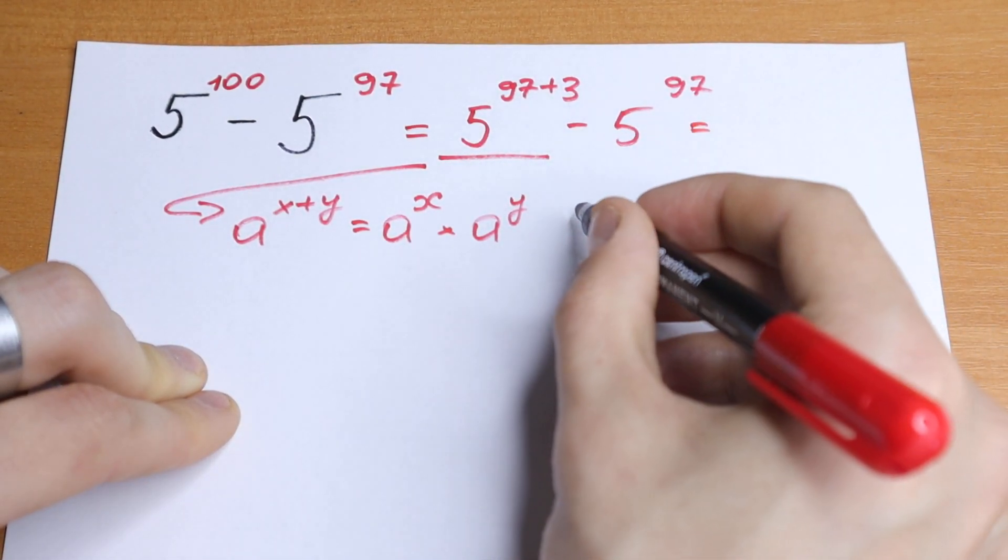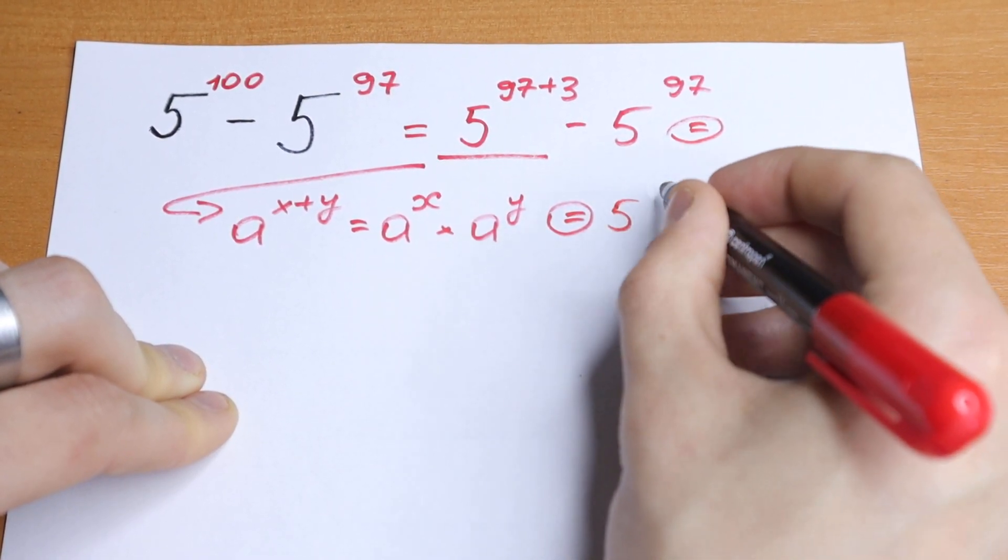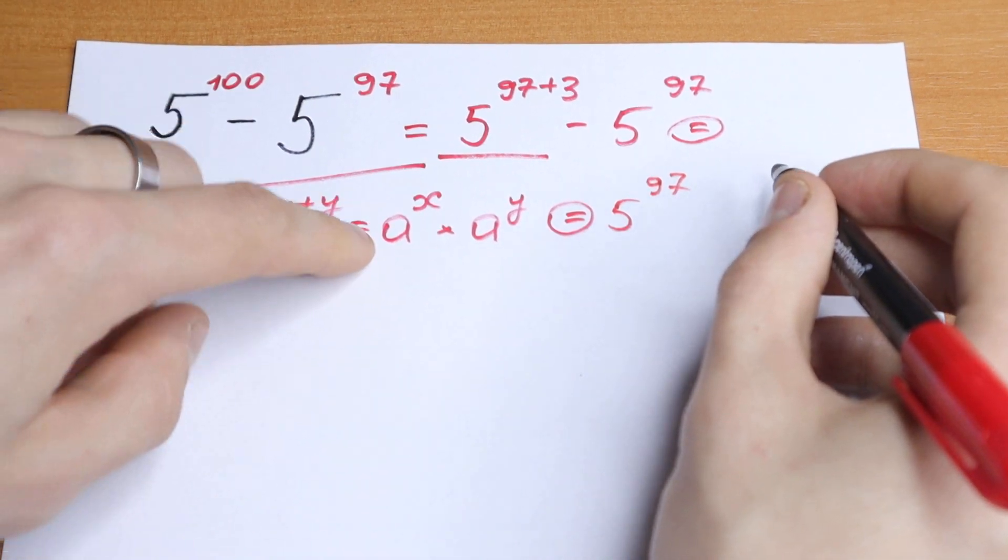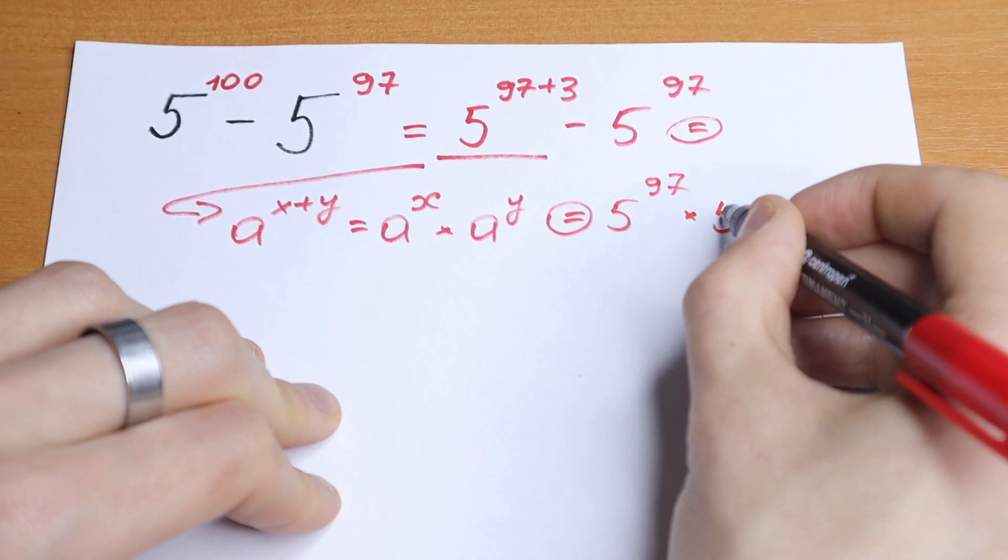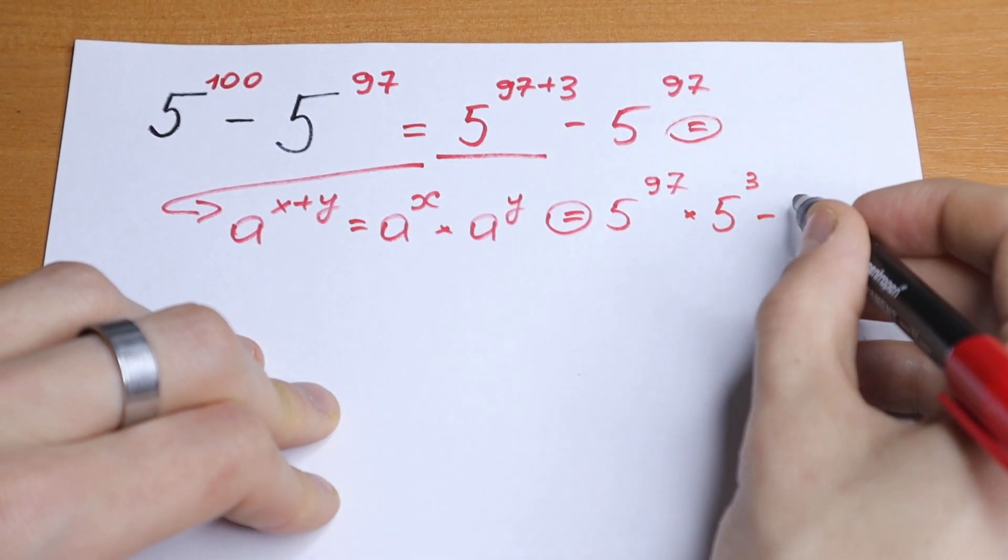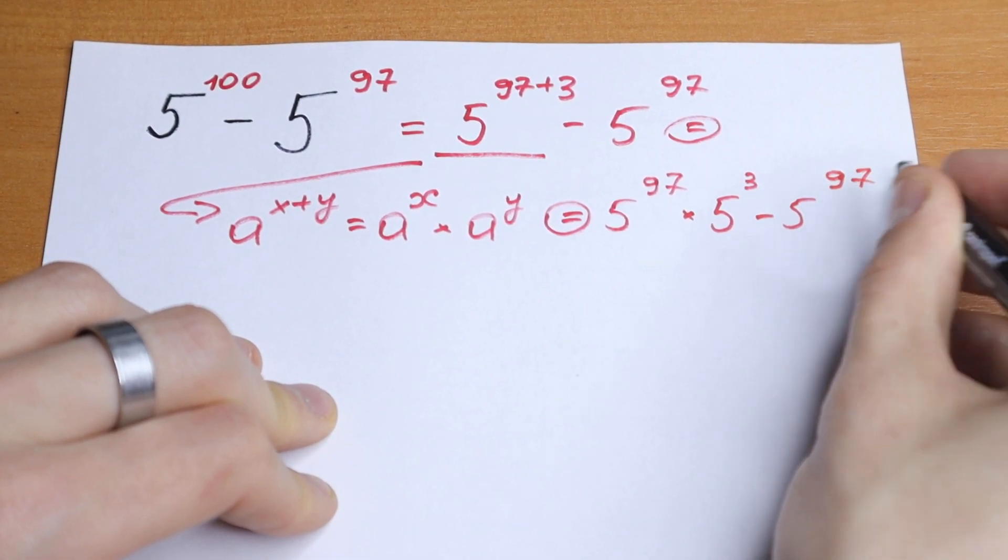And it's our case, so let's do this. We will have 5 to the power 97, a to the power x, the first power, times 5 cube. And minus 5 to the power 97, as we have right here.